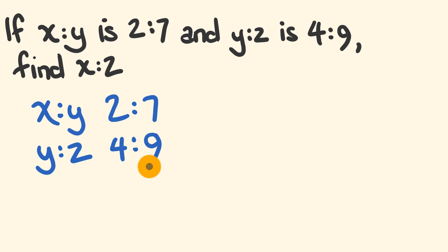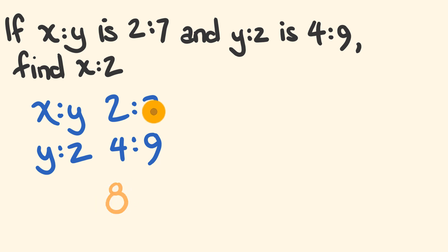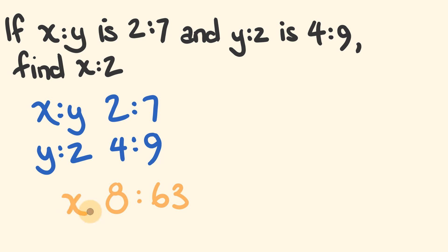Now we're going to work out x is to z. What we do is we just multiply down. So first off we have 2 times 4, which is equal to 8, and now we have 7 times 9 which is equal to 63. And that is our answer: x is to z is 8 is to 63. You literally just multiply these guys down like that.